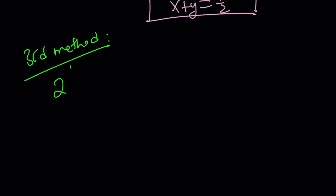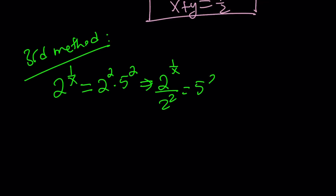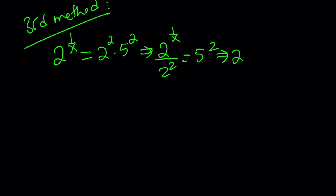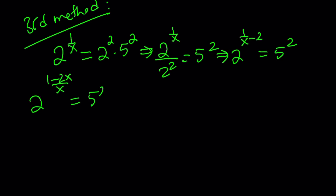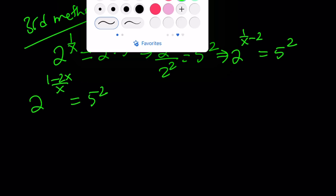For the third method, we break down 100. For 2 to the power of 1 over x, we write 100 as 2 squared times 5 squared. We divide both sides by 2 squared, then subtract the exponents using rules of powers. Our goal is to isolate 5 and substitute it into the second equation. We make a common denominator and raise both sides to the power of 1 half — square rooting both sides — which does the trick.